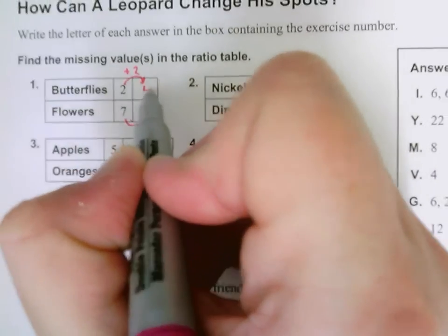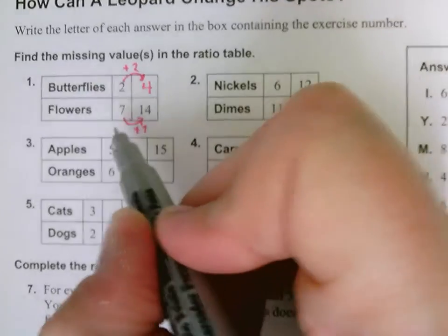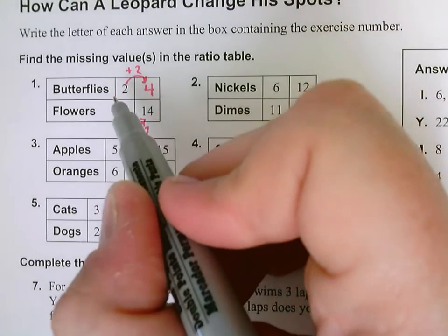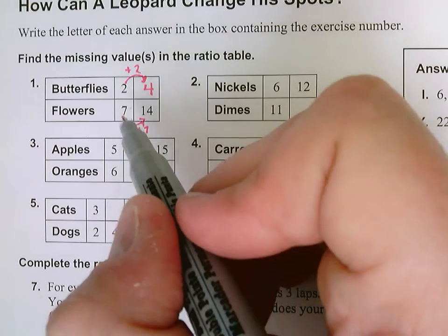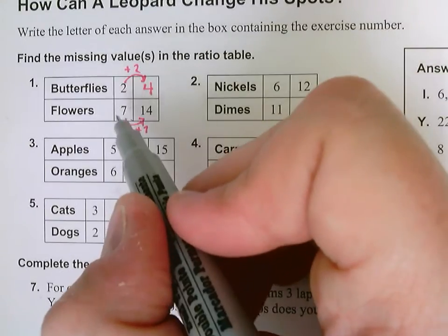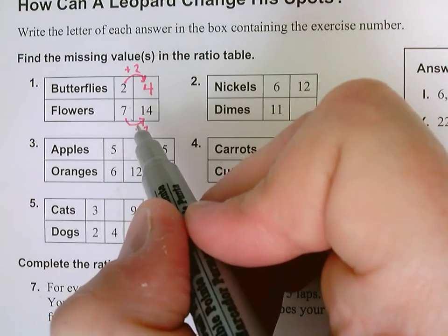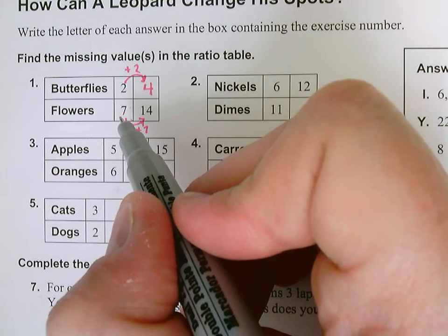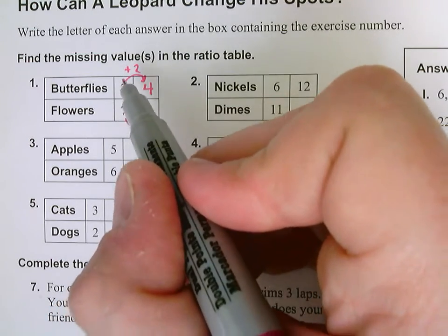I also could have known that seven times two is 14. I could have done two times two is four. Remember, whatever you're doing on the bottom, you're going to do the same. If you're adding, you're going to add the same value that you started with at the beginning. If you're multiplying, you're going to multiply by the same number on the top and the bottom.